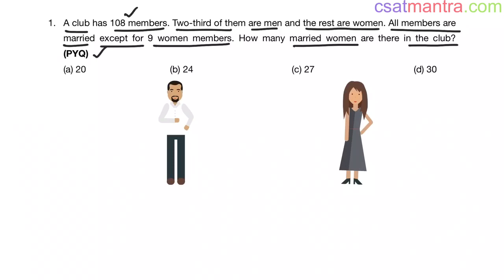A club has 108 members. Two-third of them are men. Two-third is men, then women will be one-third. One-third of total members, 108. This is equal to 36. This is the total number of women in the club my friends.